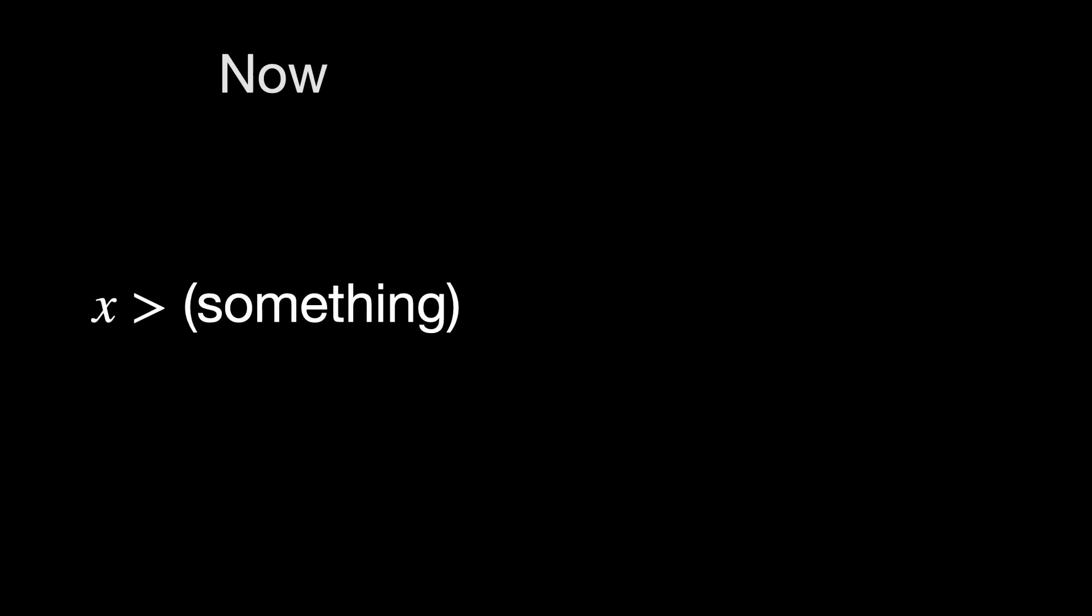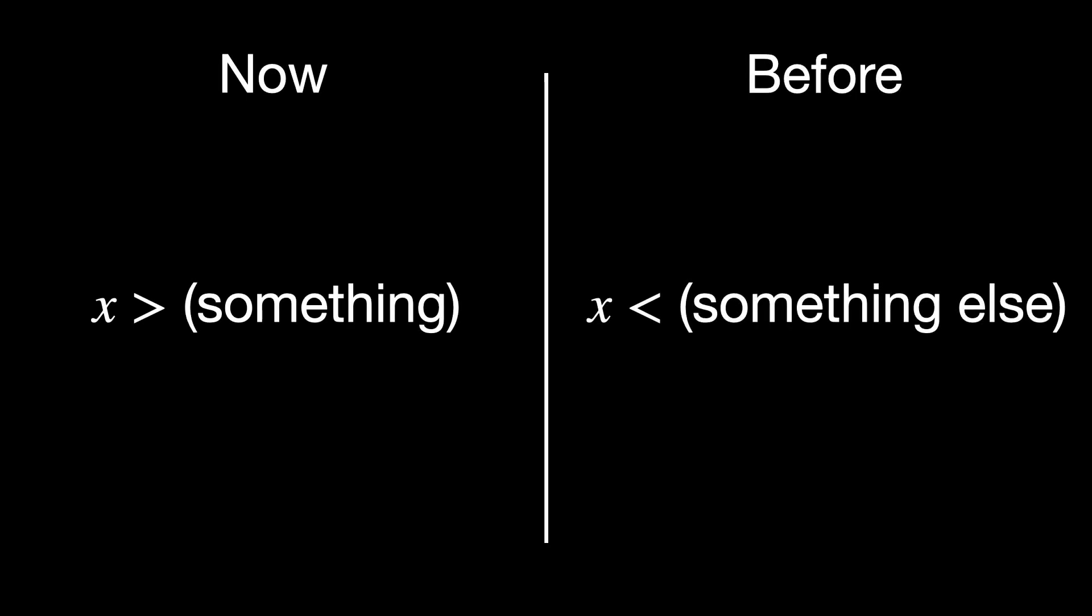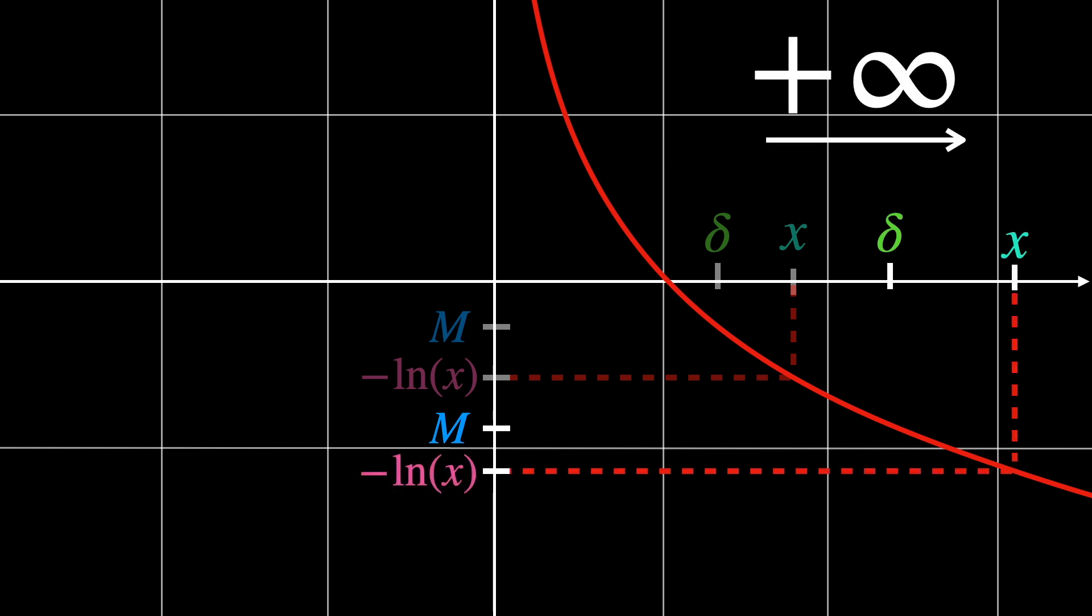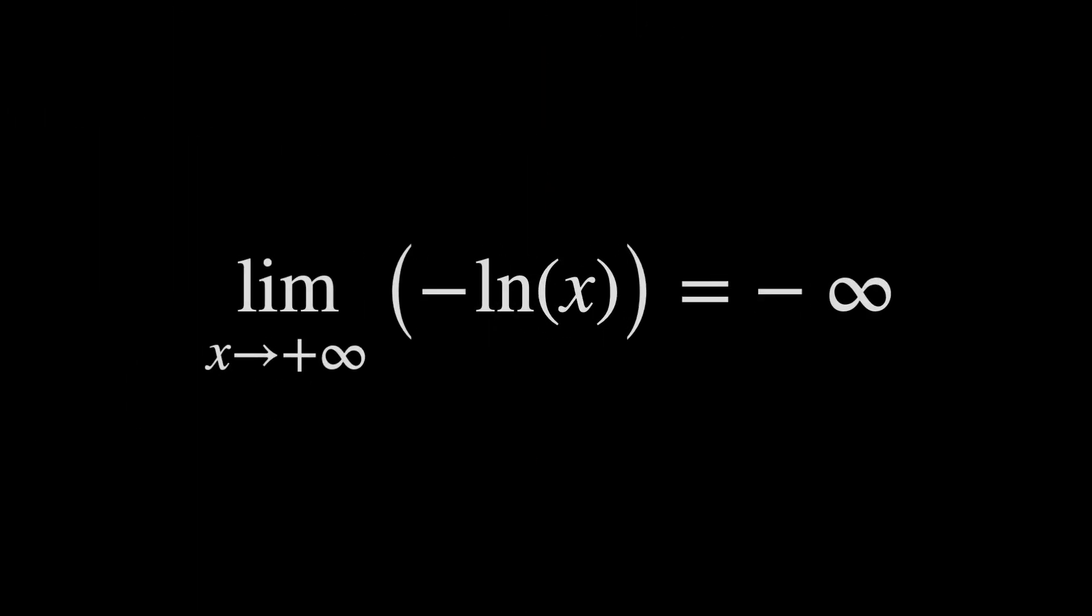So, now, x is greater than something, which is the opposite of what we got in the previous example, which was x less than something else. This means that we cannot find smaller and smaller values of delta that satisfy any choice of m. Instead, we need to find larger and larger values of delta. We actually showed that the limit with x that tends to plus infinity of minus ln of x is minus infinity.